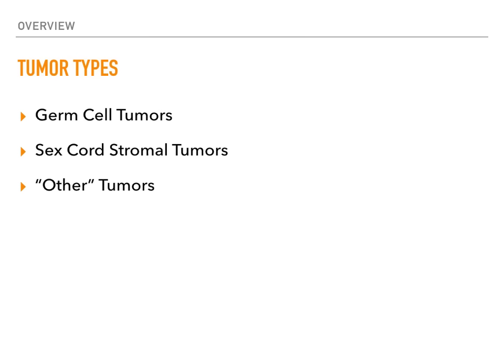Generally speaking, there are three major classes of ovarian tumors: germ cell tumors, sex cord stromal tumors, and what I call the other tumors. The other tumors are historically lower yield, but I'll include them at the end and just fly through them. So let's start with germ cell tumors.